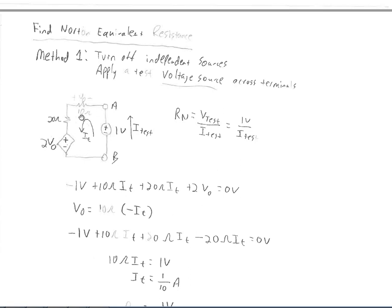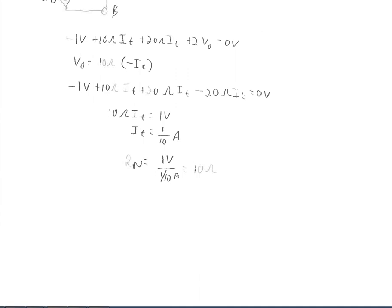If IT had gone clockwise it would be 10 ohms·IT, but since it flows backwards we need 10 ohms times negative IT. Plugging this into the 2VO term gives minus 20 ohms·IT. So the full equation becomes: negative 1 volt plus 10 ohms·IT plus 20 ohms·IT minus 20 ohms·IT equals 0. Condensing, we find IT equals 1/10 amp. Therefore, RN equals 1 volt divided by 0.1 amp, which gives RN equals 10 ohms.